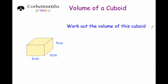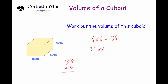Next question: work out the volume of this cuboid. We do the length times the width times the height — 6 times 6 is 36, then 36 times 4. Four times 6 is 24, put the 4 down and carry the 2; 4 times 3 is 12 plus 2 is 14. So the volume is 144 centimetres cubed.